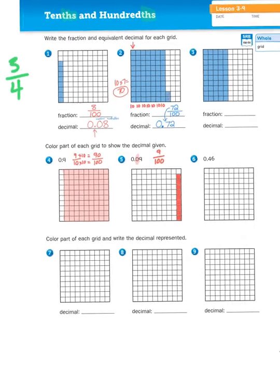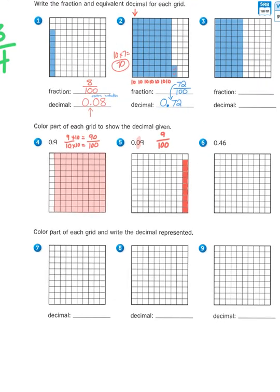Now, finally, let's take a look at the last row of problems. It says color part of each grid and write the decimal represented. So this is basically an exercise where you get to create your own decimal value and then shade in the appropriate parts.